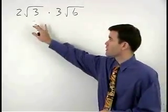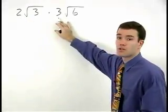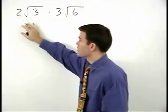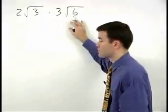To multiply two radical expressions that have numbers outside the radicals, simply multiply the numbers outside the radicals together, and multiply the numbers inside the radicals together.